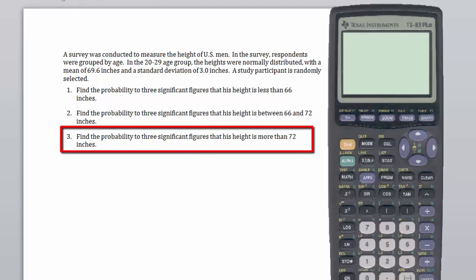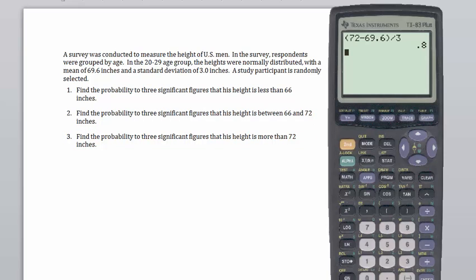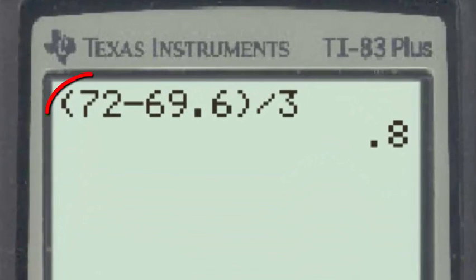In part 3 of this problem, we were asked to find the probability that a randomly selected study participant has a height more than 72 inches. Using the z-score formula, we find that the z-score for 72 is 0.8.